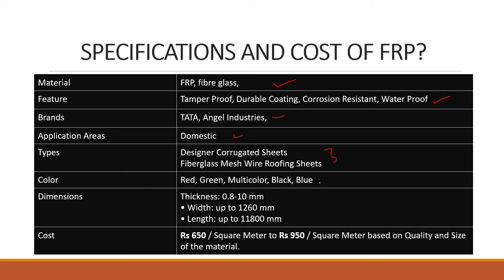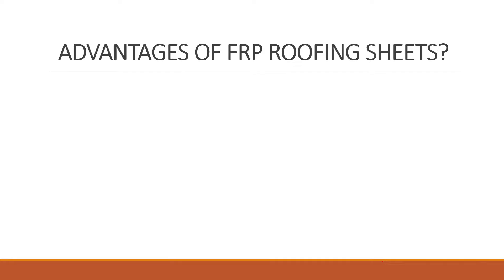FRP roofing sheets are available in various colors. The thickness varies between 0.5 mm to 10 mm, the width is up to 1260 mm, and the length is up to 11800 mm. The cost fluctuates in the market based on many factors. Nominal rates range from approximately 650 per square meter to 950 per square meter, based on quality and size of the material.